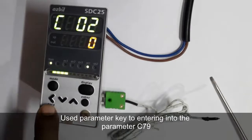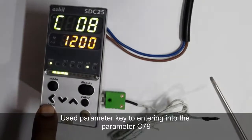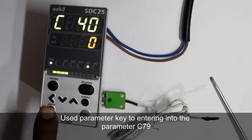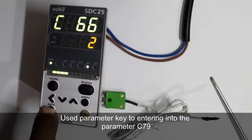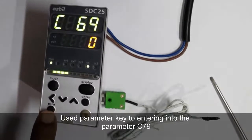Now press the parameter button again to access parameter code C79, which is used for user level configuration.